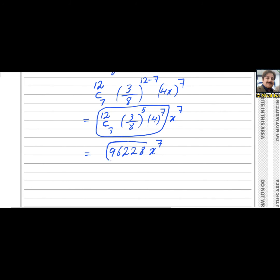Therefore, you can write the coefficient of x to the power 7. Coefficient of x to the power 7 will be equals to 96228. So this is the required answer for question number 2.